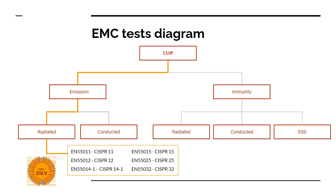EMC test diagram. Electromagnetic compatibility tests are divided into emission and immunity. Emission is divided into radiated emission and conducted emission, and immunity is divided into radiated immunity, conducted immunity, and ESD — electrostatic discharge.